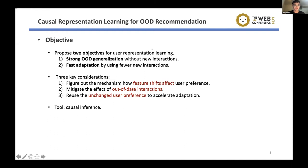To achieve these two objectives, we identify three key considerations. First, we need to figure out how the user feature shift will affect user preference. Second, we need to mitigate the effect of outdated interactions. Third, we need to reuse the unchanged user preference to accelerate fast adaptation — because some user features will change while some user preferences remain stable over time, and we need to reuse those unchanged user preferences.